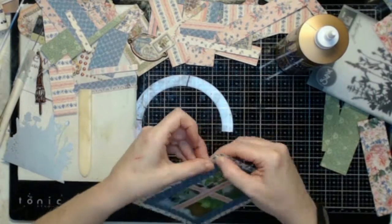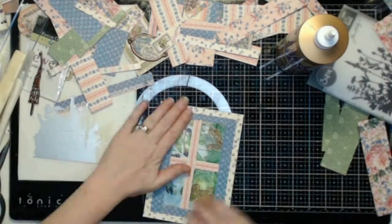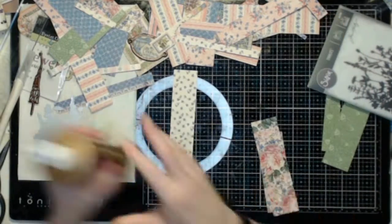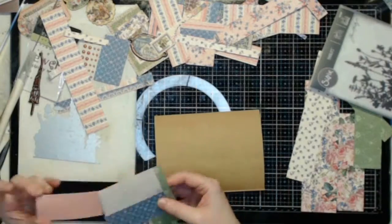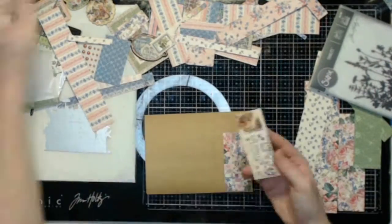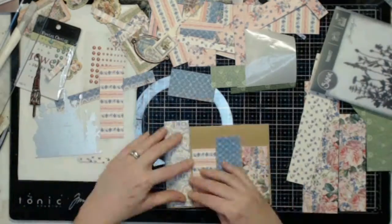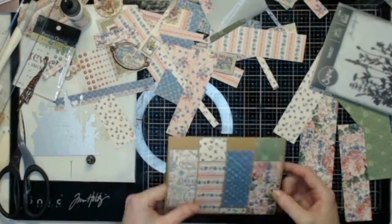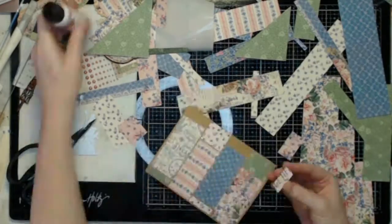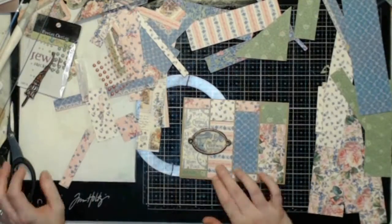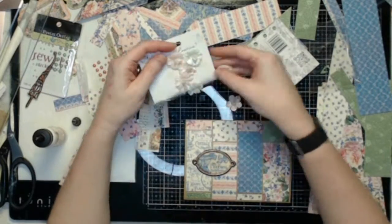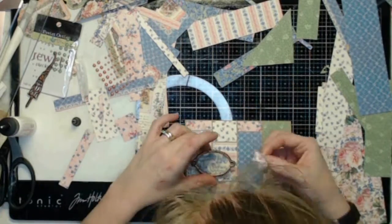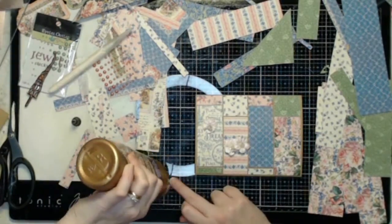My card front that goes with this envelope is far more simple than the envelope was. I just cut some rectangles out of the paper I had and covered that card front with them. Then I just added on another one of those chipboard pieces that I had from last week that I didn't use and a few of the Prima flowers that I didn't use in June.